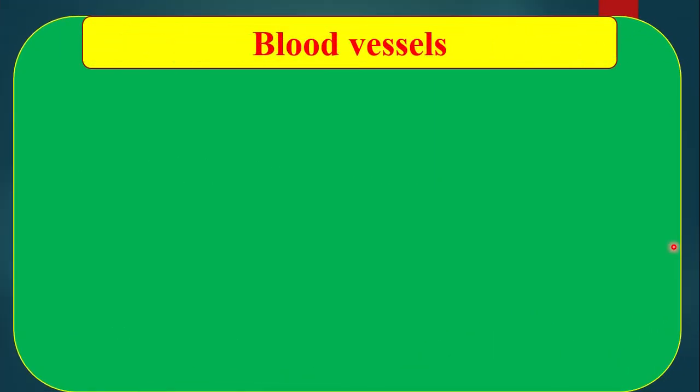Blood vessels. What are blood vessels? The way of blood, or the vessels which help to supply blood into different parts of the body. The way of blood in our body is called blood vessels.